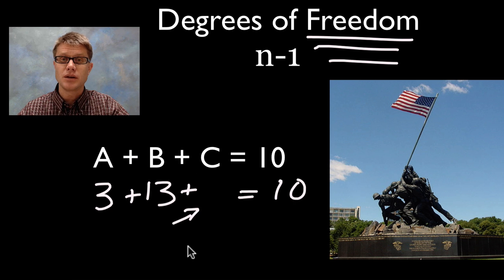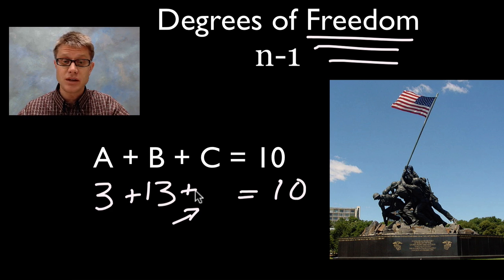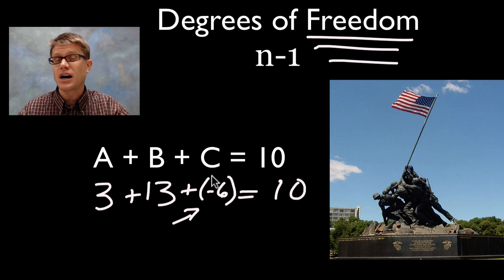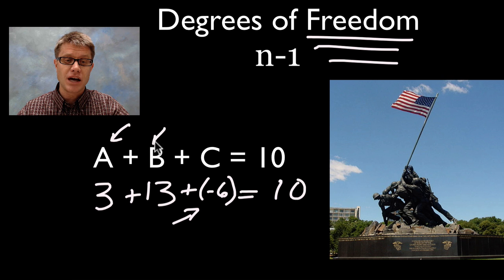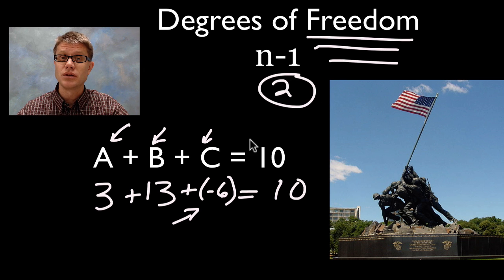Well I've all of a sudden lost my freedom here. In other words if this is 3, this is 13, this has to be negative 6 if I want this to be 10, because this is 16 minus 6, that's got to be 10. And so all of a sudden I lost my freedom. When we're talking about degrees of freedom how do you figure that out? Well you take the number in your data set, in this case it's going to be 3, and you're going to subtract 1 from that. So in this case I had 2 degrees of freedom, or there were 2 numbers at which I had a choice as to what I was going to choose.